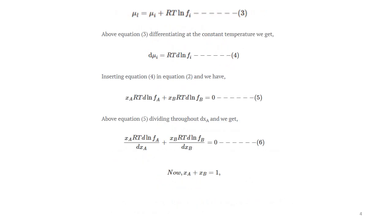By differentiating at constant temperature, we get: dμ_i = RT·d·ln(f_i). This is equation 4. Inserting this into equation 2, we substitute dμA = RT·d·ln(fA) and dμB = RT·d·ln(fB), giving us: XA·RT·d·ln(fA) + XB·RT·d·ln(fB) = 0. This is equation 5.